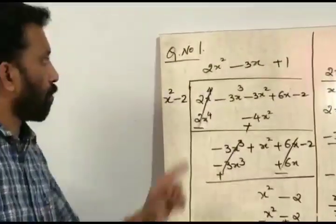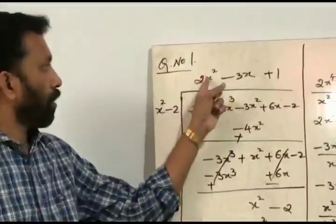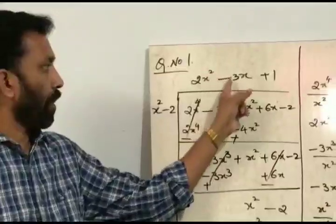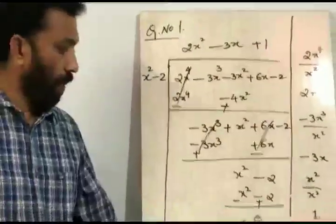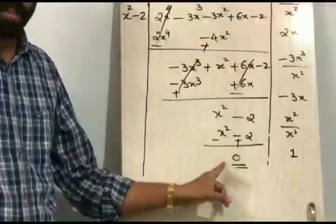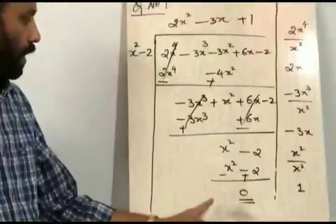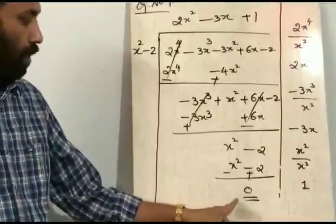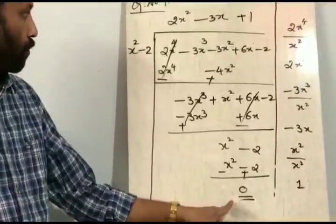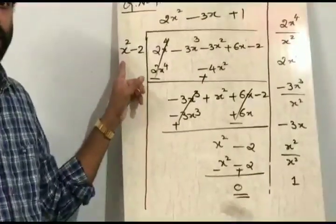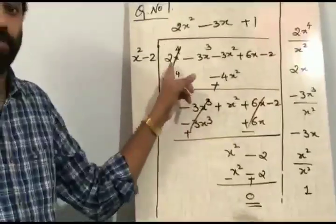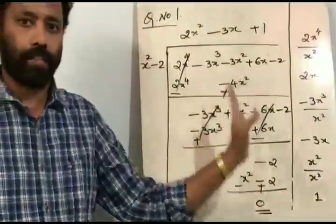So here the quotient is 2x squared minus 3x plus 1, and the remainder is 0. Since the remainder is 0, we can say that g of x is a factor of p of x.